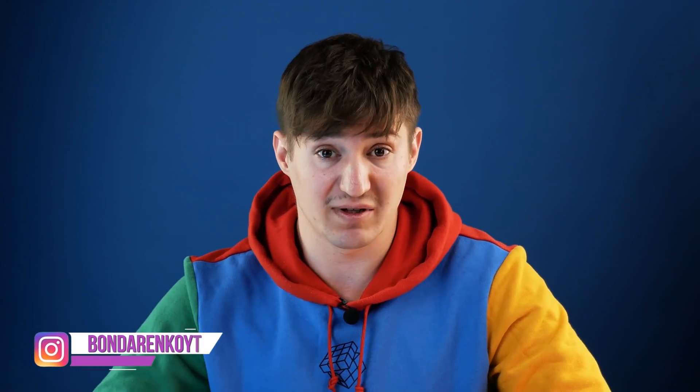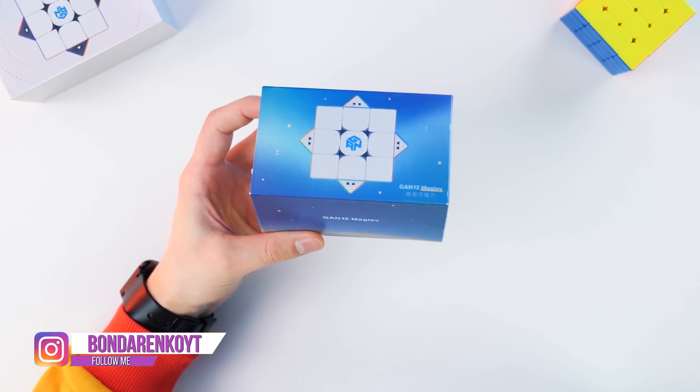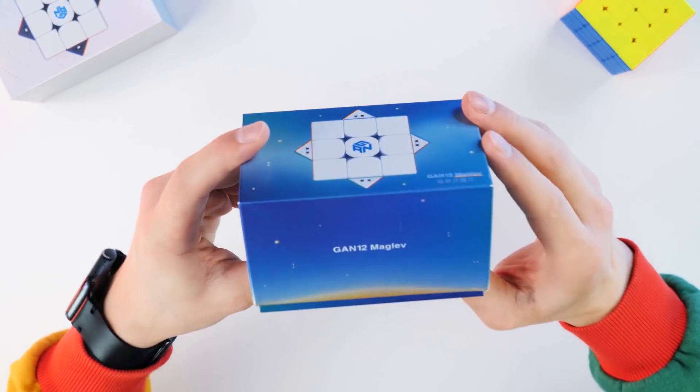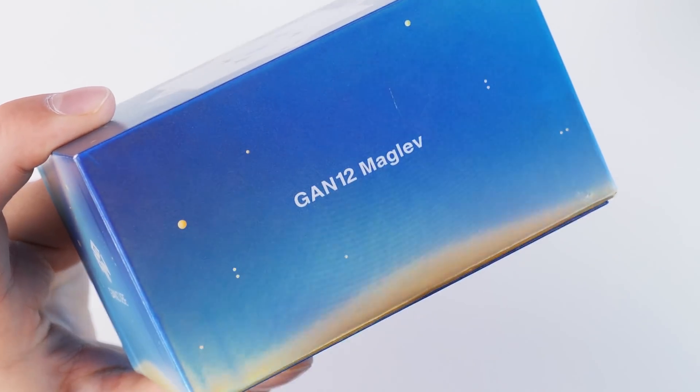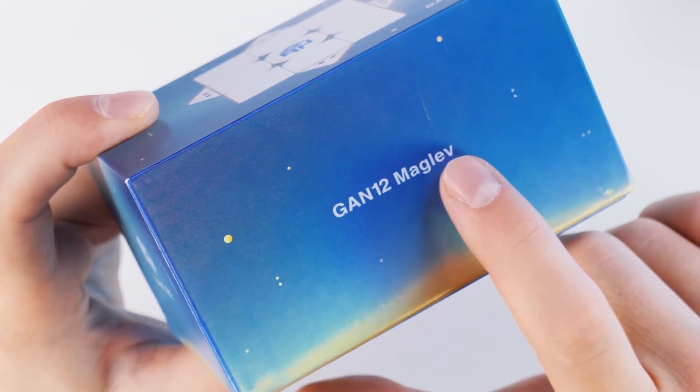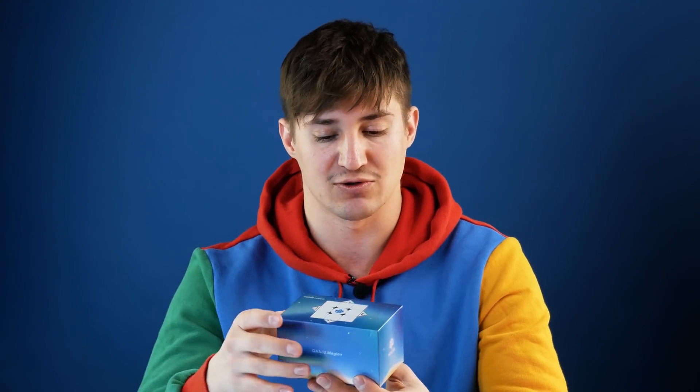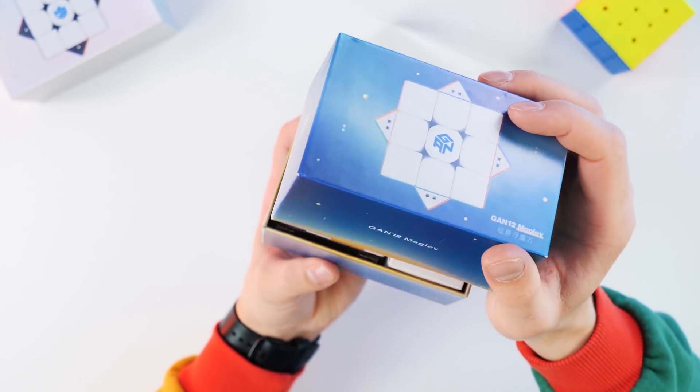Hey everyone, that's Cubastic, and today we review one of the most expensive and really cool Rubik's cubes. The technology here is so modern that even in the name of the GAN 12 Maglev cube, it is indicated that magnetic levitation is present in the construction technology of this cube. You heard it right, it's a magnetic cube. Today we will find out how this technology is implemented and how it allows you to solve the Rubik's cube faster.